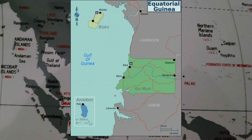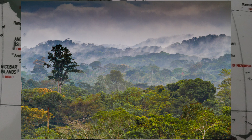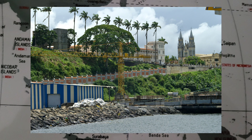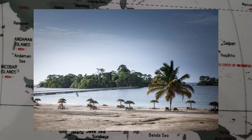Equatorial Guinea is a country on the west coast of Central Africa, with an area of 28,000 square kilometers or 11,000 square miles. As of 2021, the country had a population of 1,468,777. The country's economy is largely based on oil and natural gas, with Equatorial Guinea being a major oil producer in Africa.